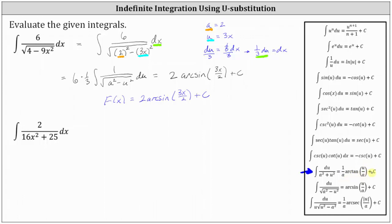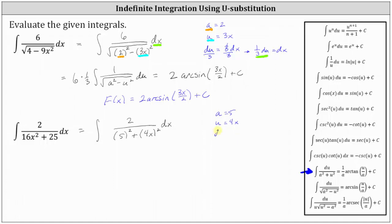Again, let's rewrite this so it better fits the form of the formula. The given integral equals the integral of two divided by — a squared is a constant, and 25 equals five squared, so let's write this as the square of five — plus 16x squared, which equals the square of four x. Comparing this to the integration formula, we now know a equals five and u equals four x. We need to determine du, where du equals the derivative of four x times dx, which is four dx.